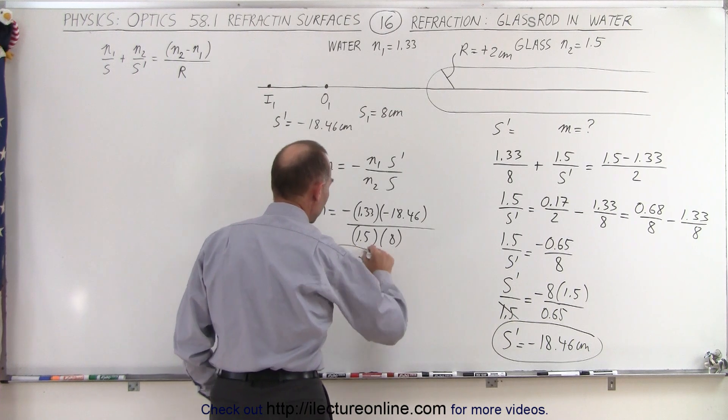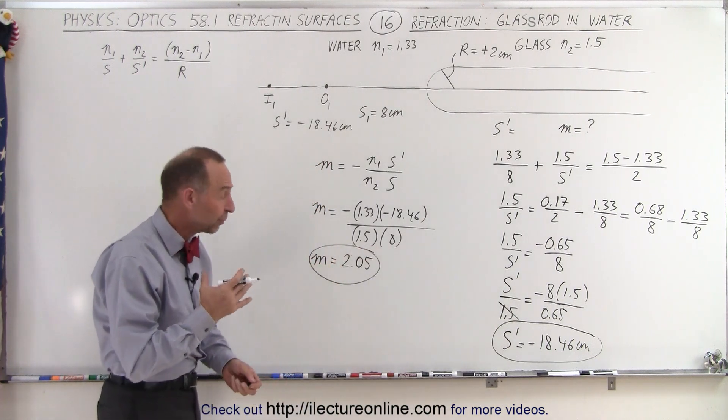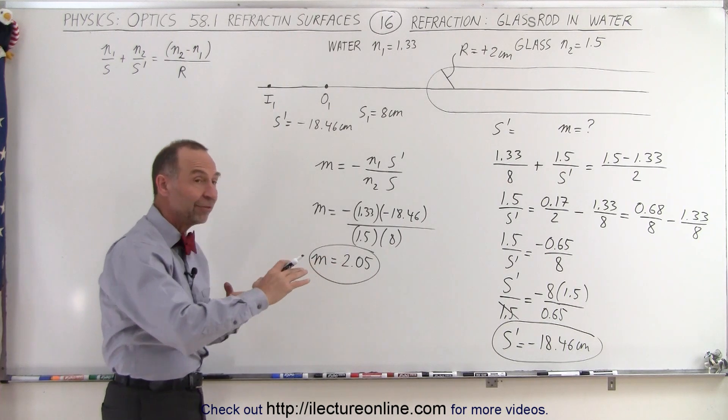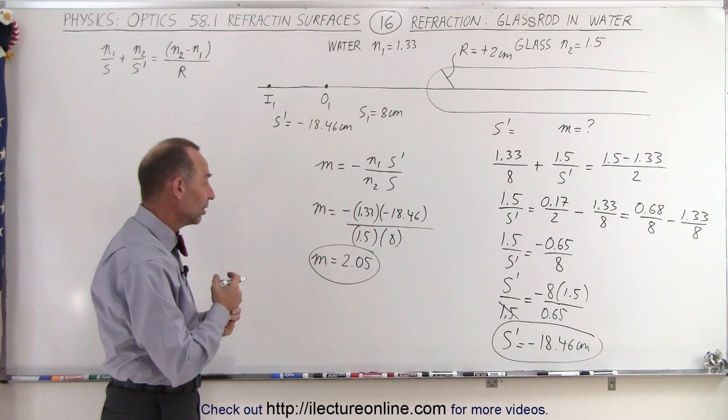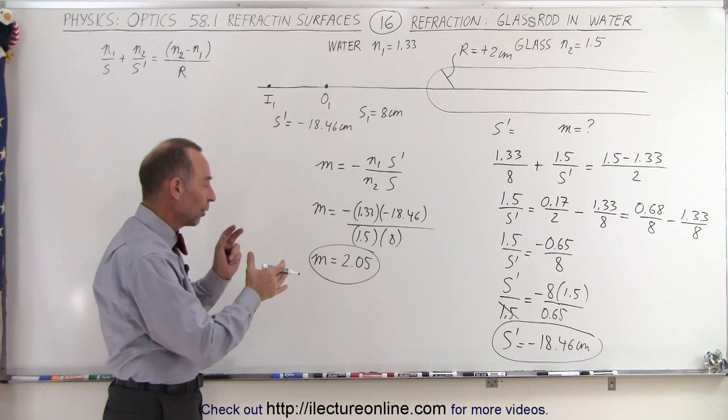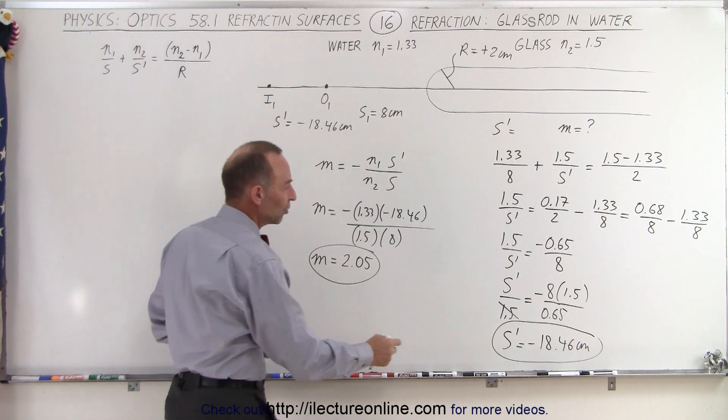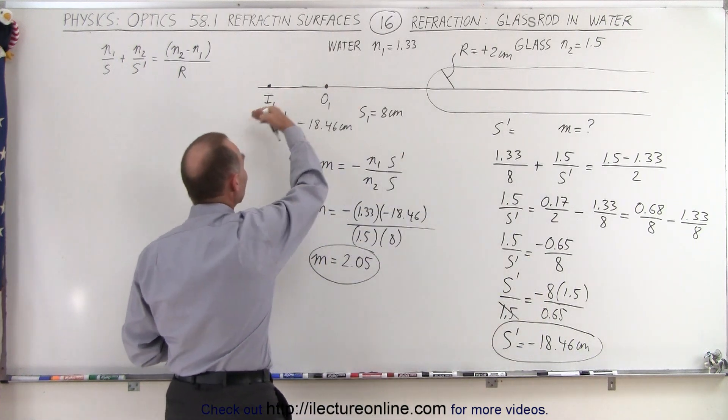Which means that the image is about two times as big as the object. And since it's positive, the orientation is going to be the same as the orientation of the object. And the image distance being negative means it's on the same side as the object.